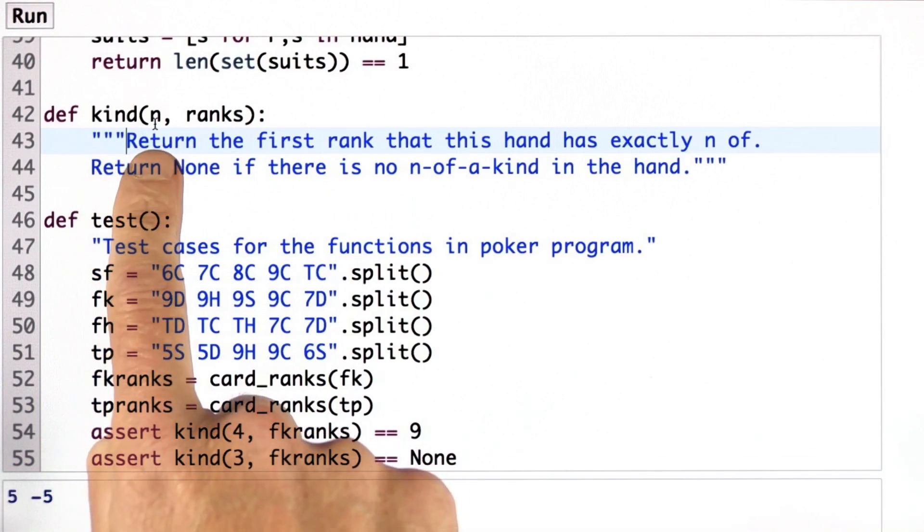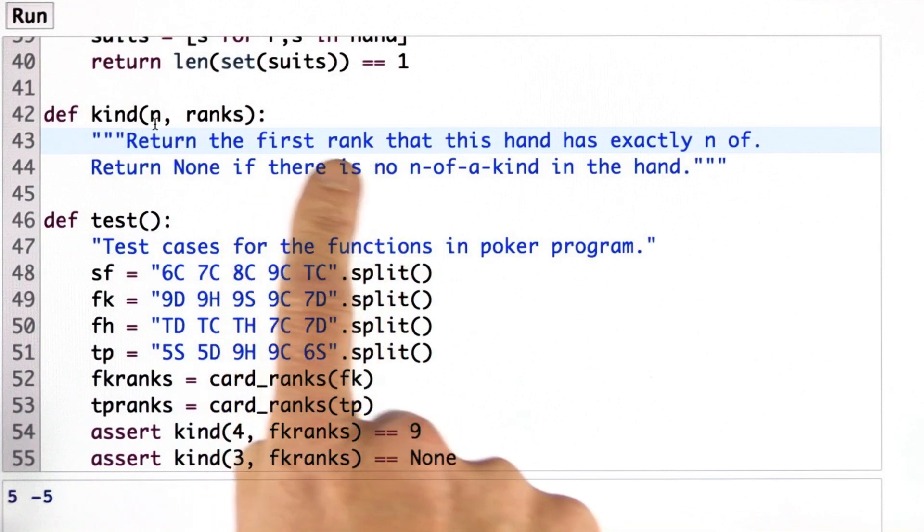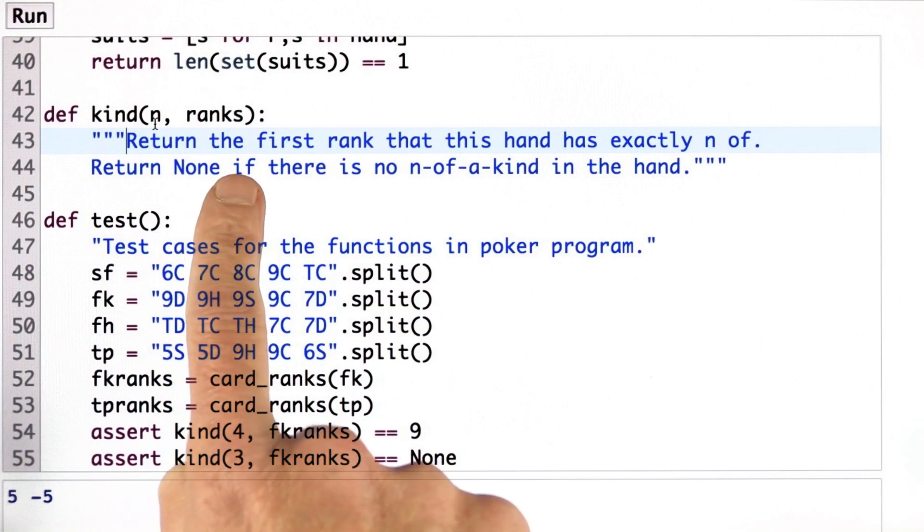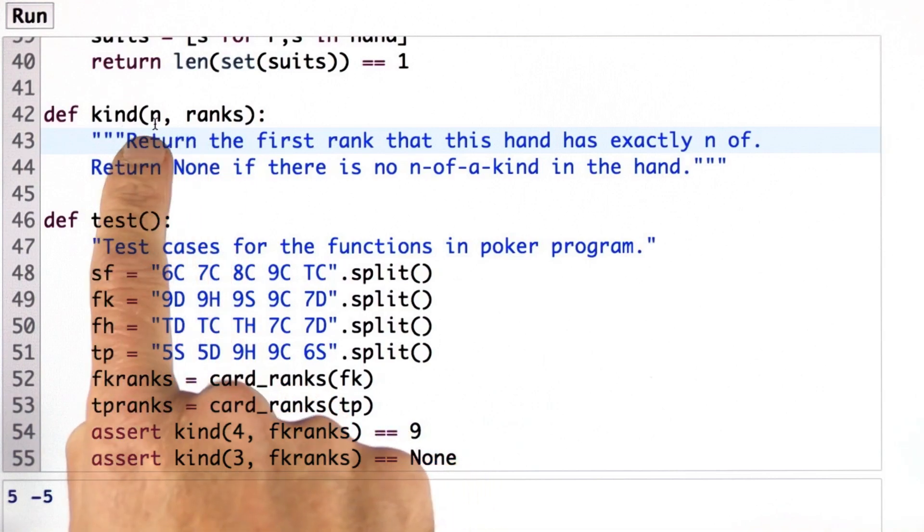Now I'm going to ask you to write the kind function, which takes the n of a kind you're looking for, the list of ranks, and it returns the rank that that hand has exactly n of. If there is one and returns none otherwise, and it should go through the ranks in left to right order and find the first one that corresponds to n of a kind.